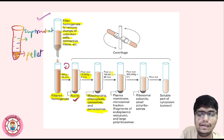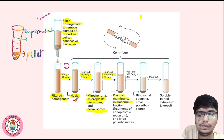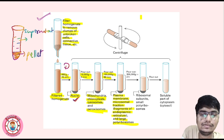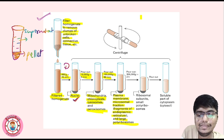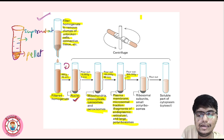We will take the supernatant and centrifuge for 60 minutes — one hour. Then we are getting plasma membrane and microsomal fraction, that is fragments of endoplasmic reticulum and large polyribosomes in the pellet. Then we will get ribosomal subunits and small polyribosomes.